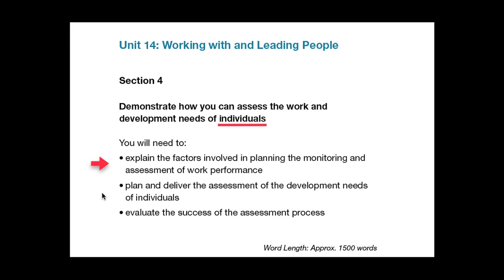Having looked at how people are performing at work, bullet point two goes on to look at how this performance can be improved or encouraged by examining the development needs of people within the organisation. Keep in mind that the emphasis in this section is on how you would go about assessing development needs rather than how you would deliver the training and development, which is covered in other units.